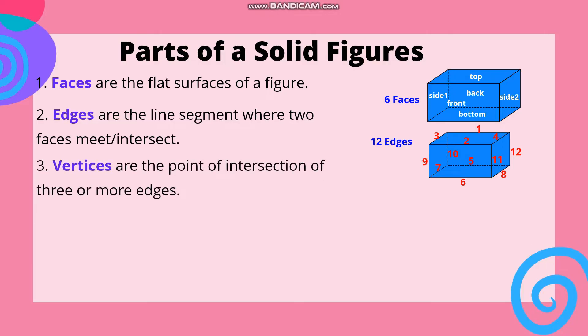Number three: Vertices. Vertices are the point of intersection of three or more edges. Ang vertex or vertices kapag plural ay ang point or corner kung saan ang three or more edges ay nag-intersect o nag-tagpo. Counting the vertices: one, two, three, four, five, six, seven, and eight. So we have eight vertices in a rectangular prism.